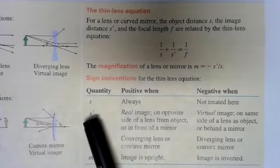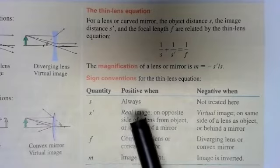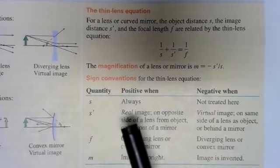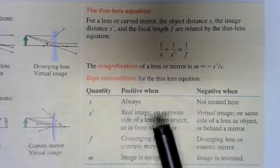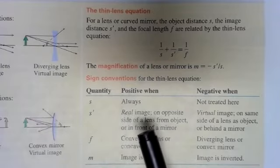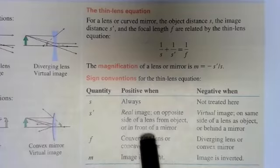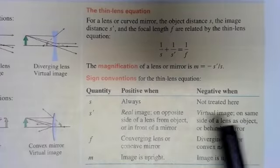We are always going to orient our ray tracing and our math setup so that our object distance is positive. And then the image distance. If you get a positive image distance, it's going to be a real image. And it's going to be the opposite side of the lens from the object or in front of the mirror. So like I said in this video, we're just going to do lenses, but it also does work for mirrors as well.